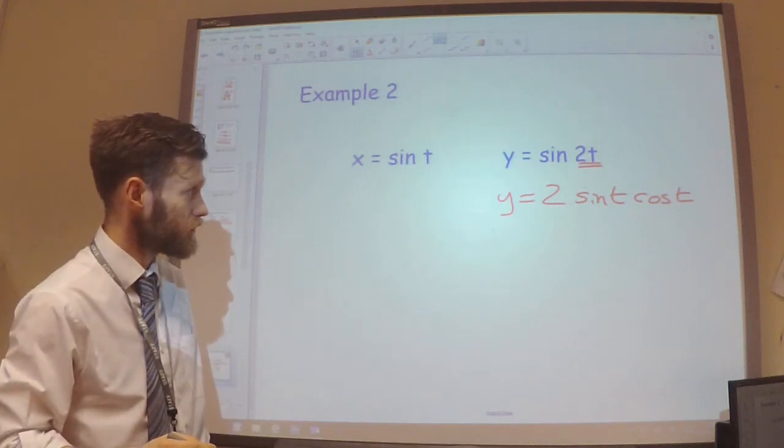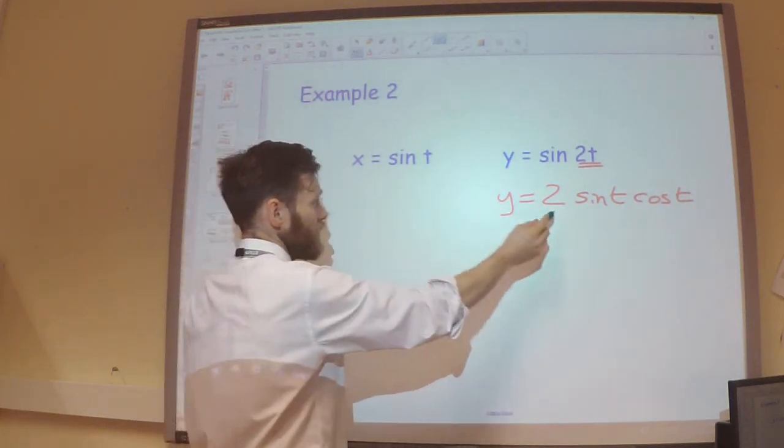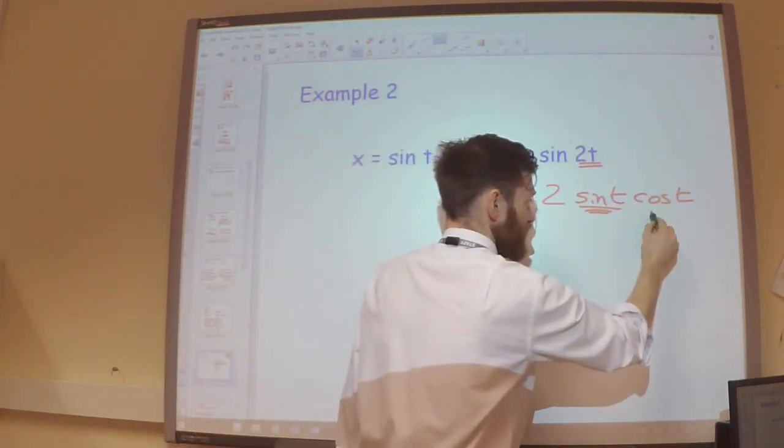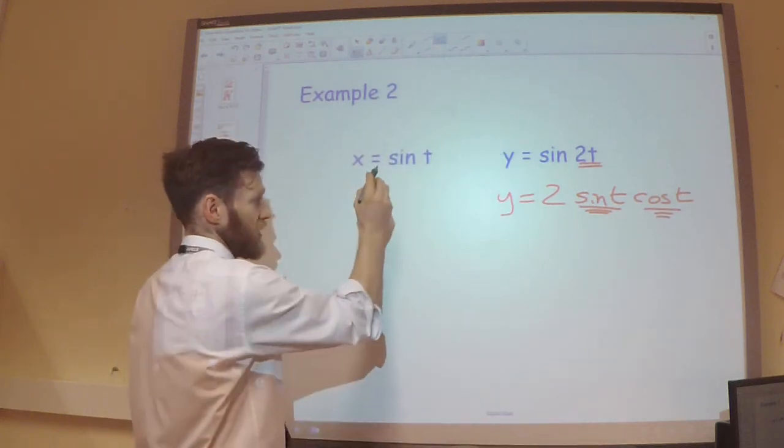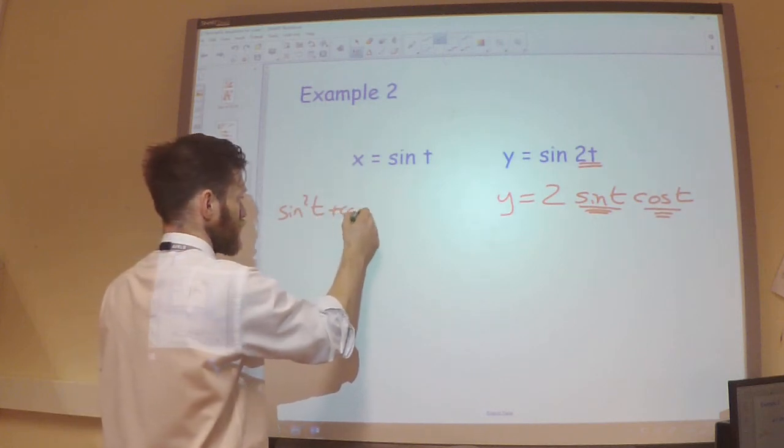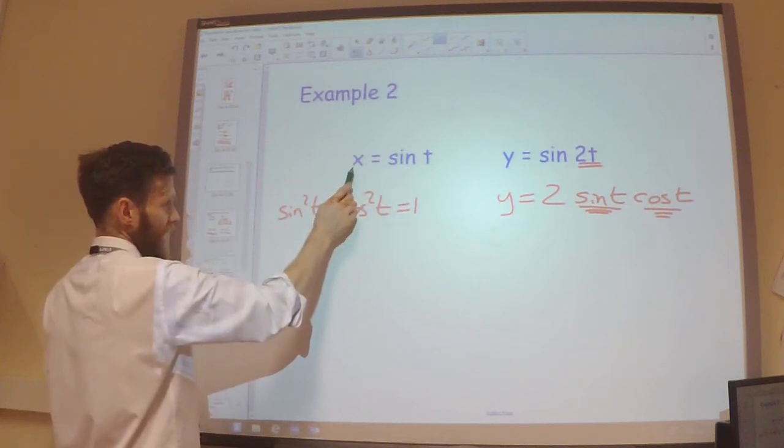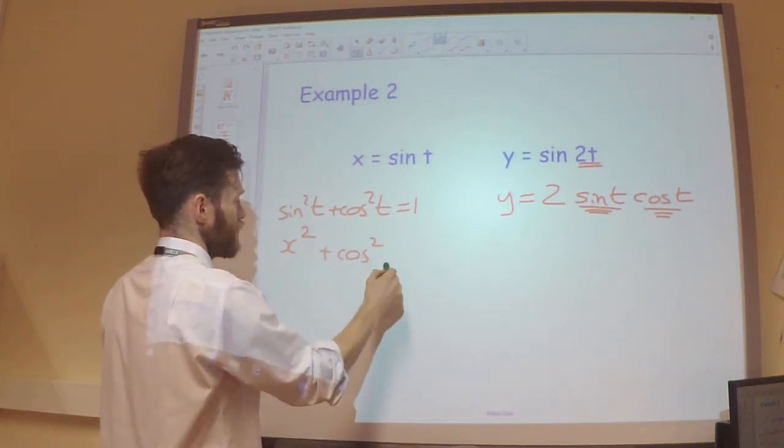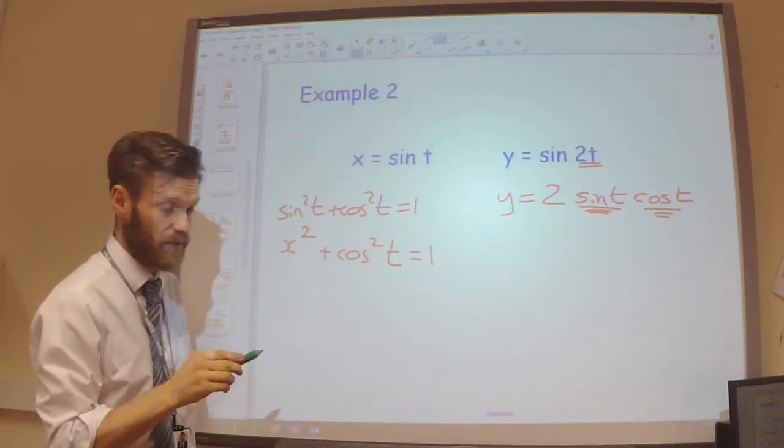Okay, so from this, we're trying to link these two things together. Now I can replace this sine t with an x. What could I do with this cos t? Well, remember, I know sine squared plus cos squared is equal to 1. And I know that sine is x. So this is x squared plus cos squared is equal to 1. So I'm just going to rearrange to make cos t the subject now.